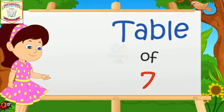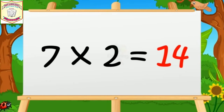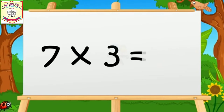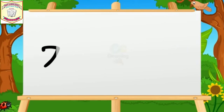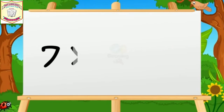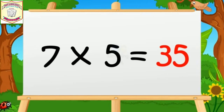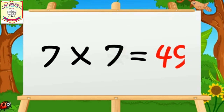Table of Seven. Seven ones are seven. Seven twos are fourteen. Seven threes are twenty-one. Seven fours are twenty-eight. Seven fives are thirty-five. Seven sixes are forty-two.